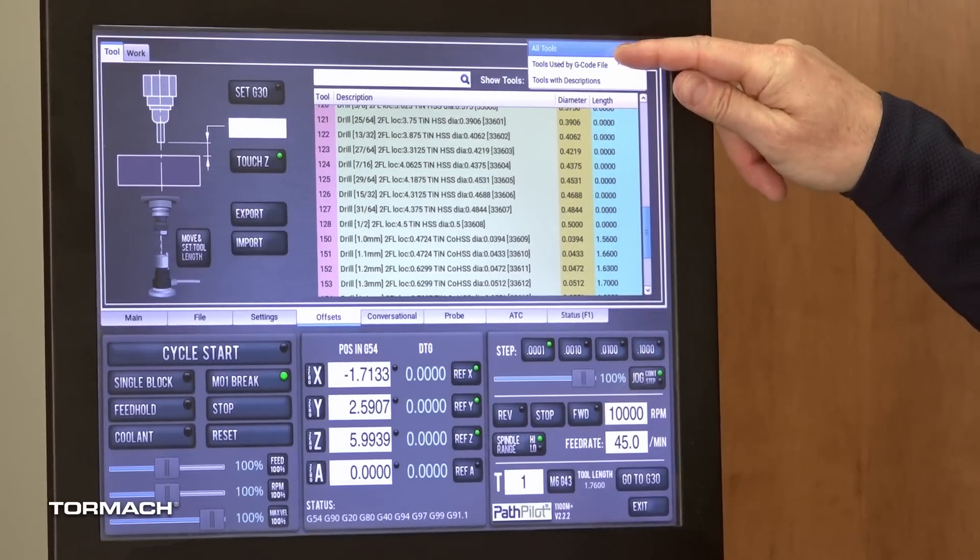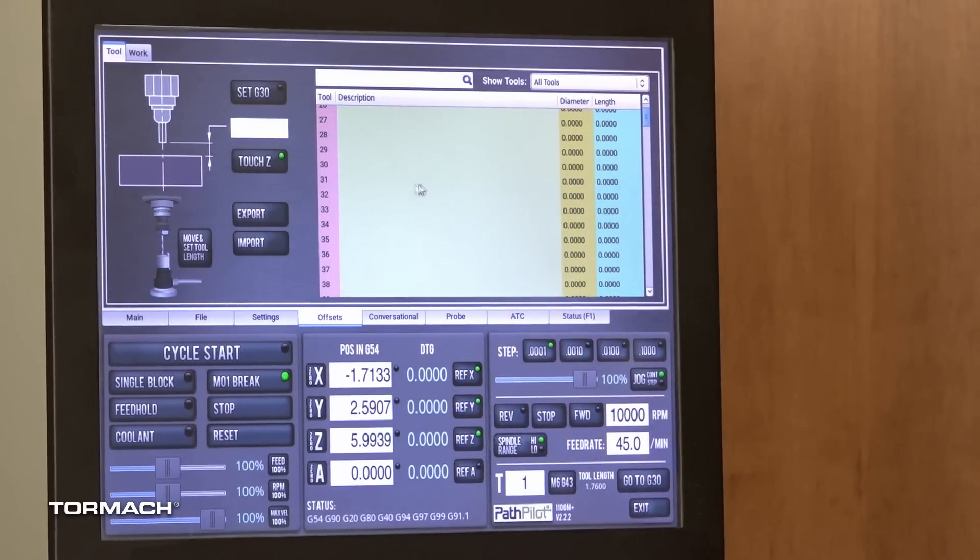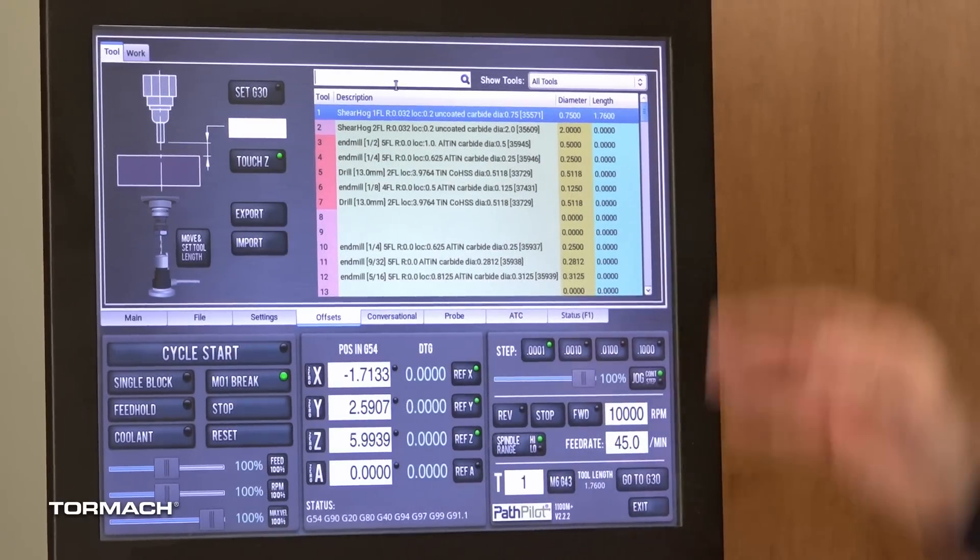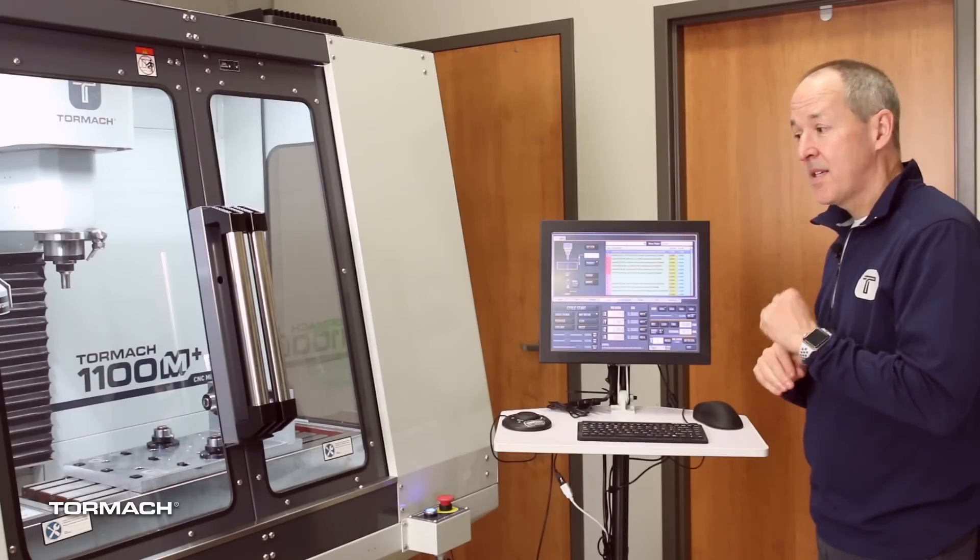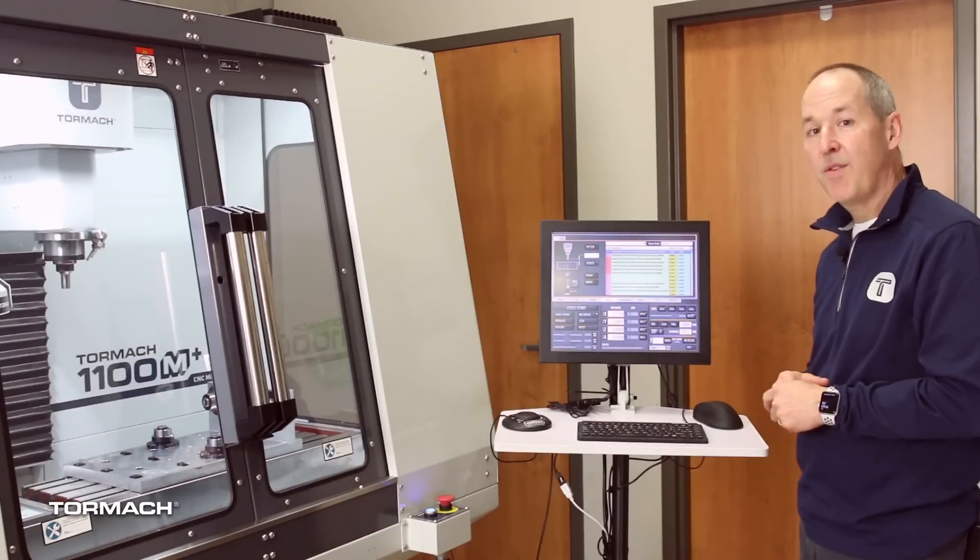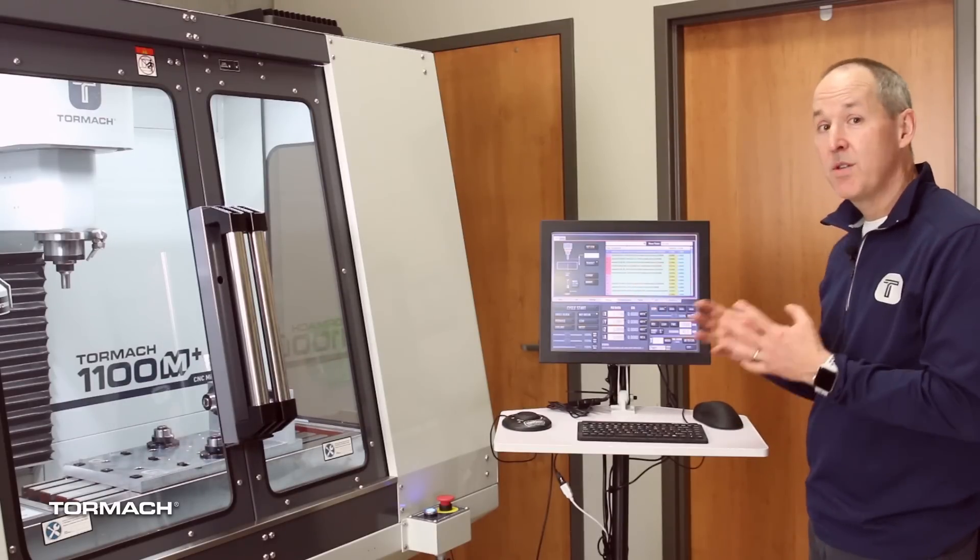So those are the new features on the filtering. We also powered up the search. We had a search capability before but it was a little hidden and limited. Now there's a nice big search box at the top and search is improved in a couple different ways. It's case insensitive, so you can search any mixed case, we'll find things. It searches across any of the columns for what you type in as well.